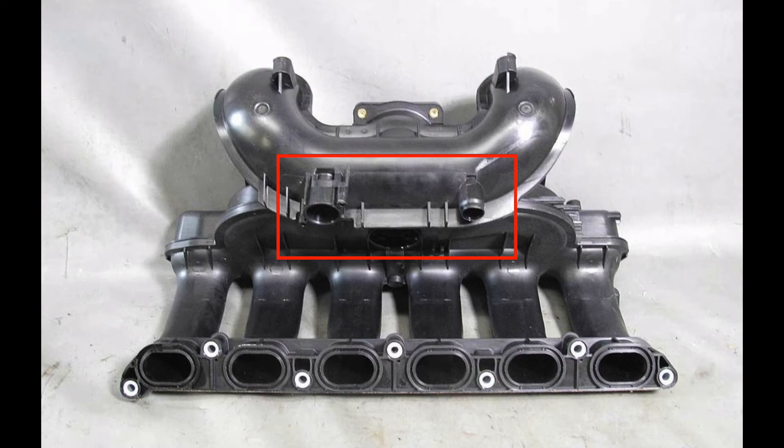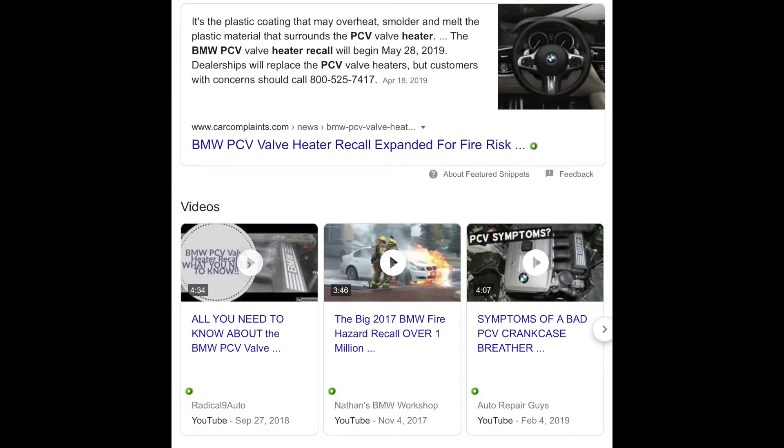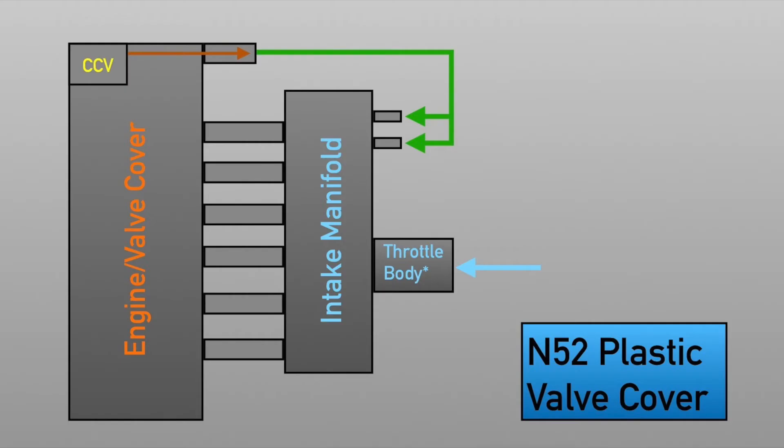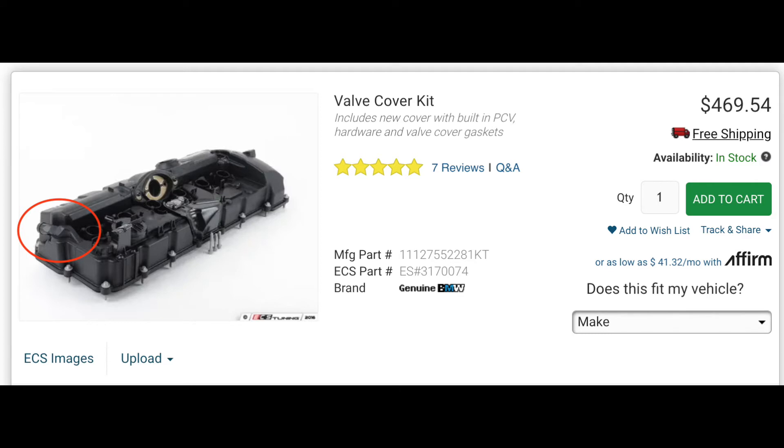One of these has the infamous PCV heater, which will burn your house down, and the other one is just a secondary port to, I presume, equal out the distribution of that oil vapor, whatever gets past that oil separator. And here's a picture of the valve cover, the plastic one, and you can see here I have circled the vent port from the CCV system that goes to the intake manifold.